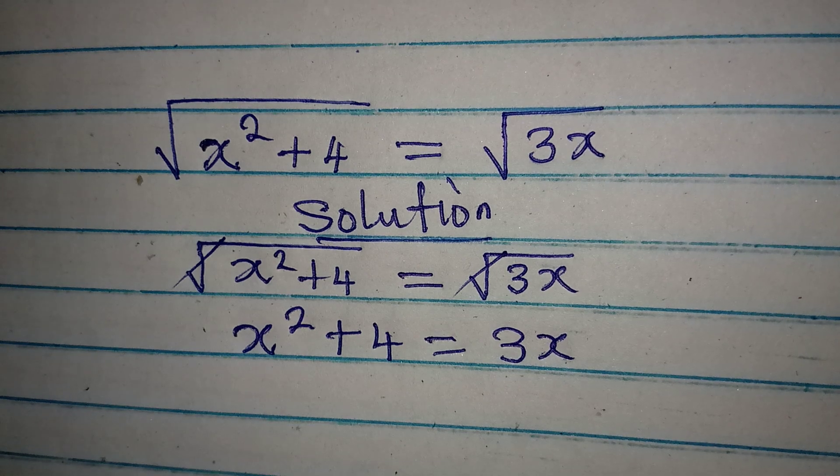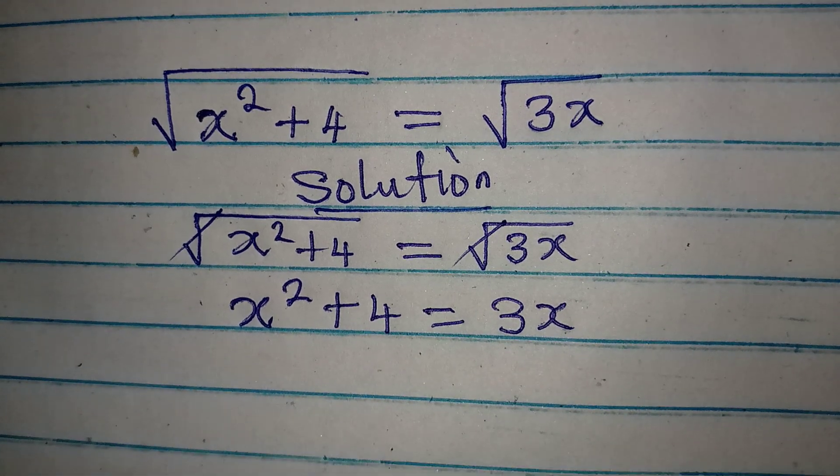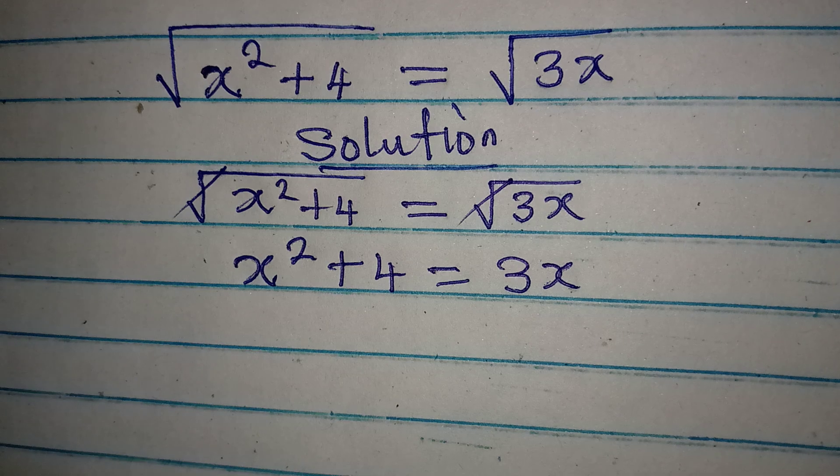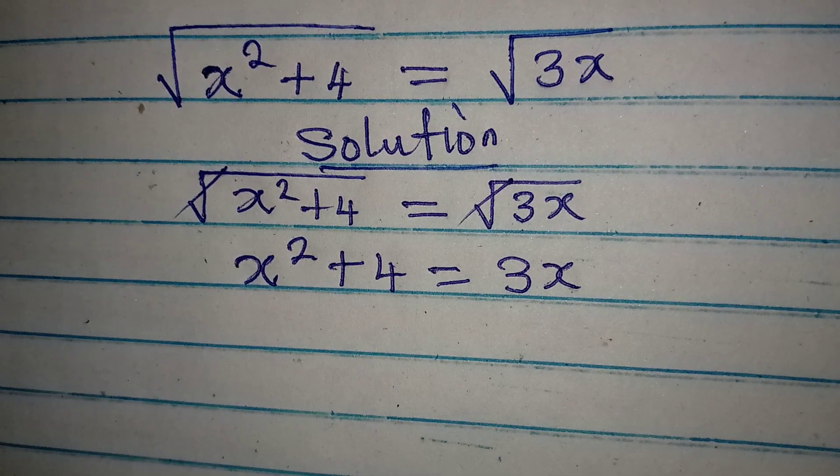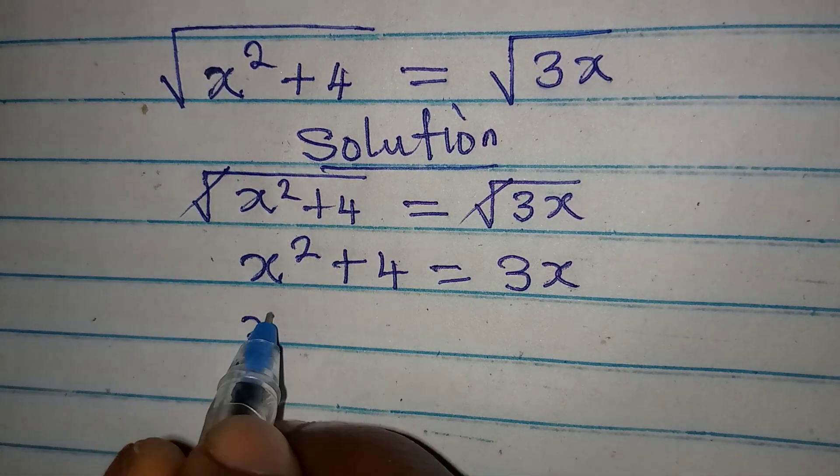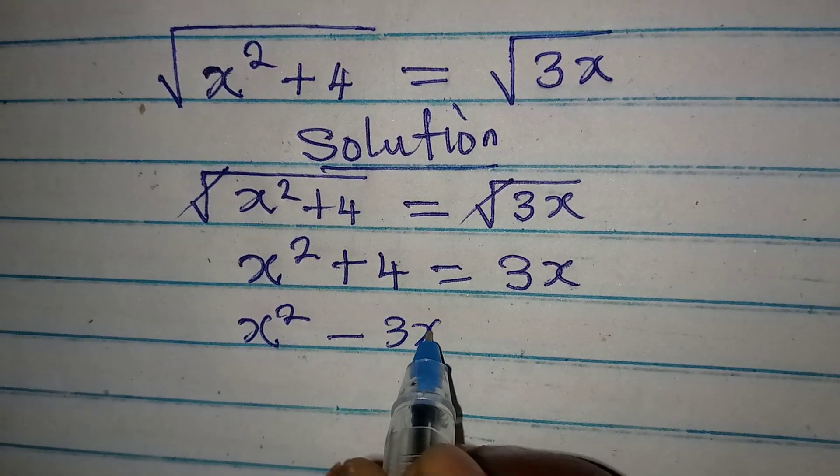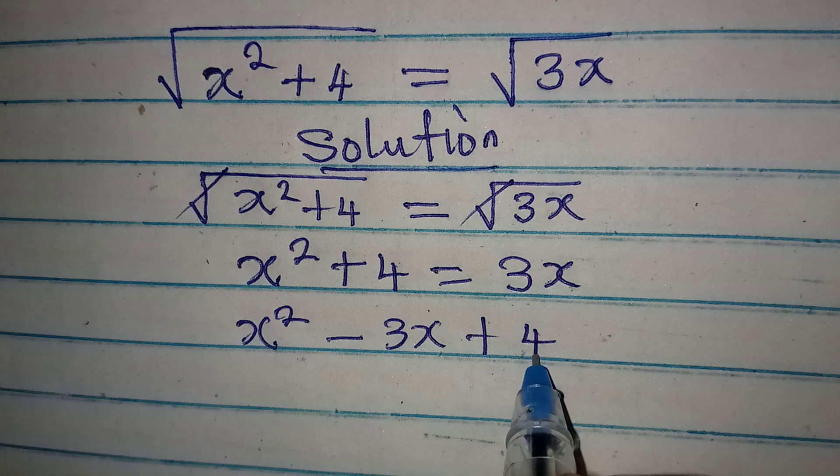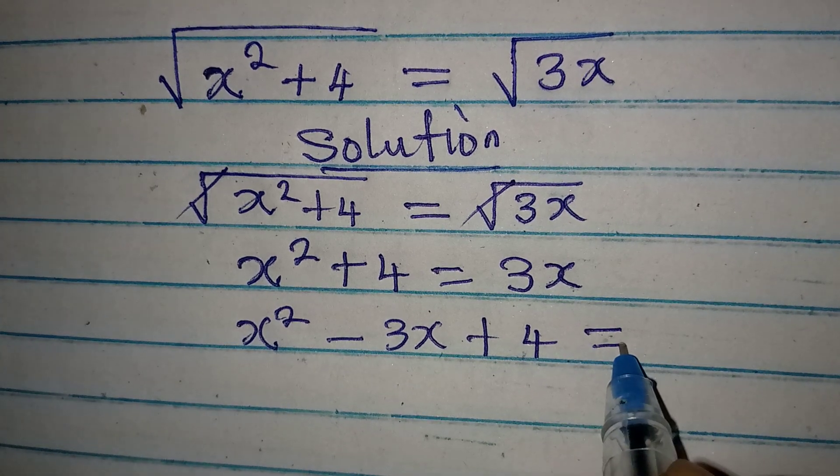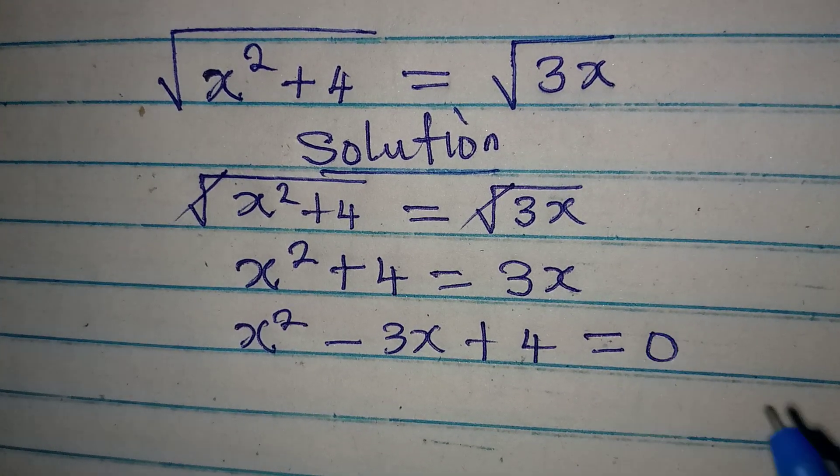Here we have a quadratic equation already. And we can rearrange this in a better way. So we have x to the power of 2 minus 3x plus 4 equal to 0.